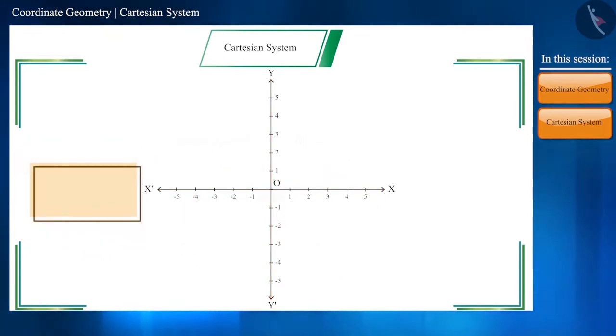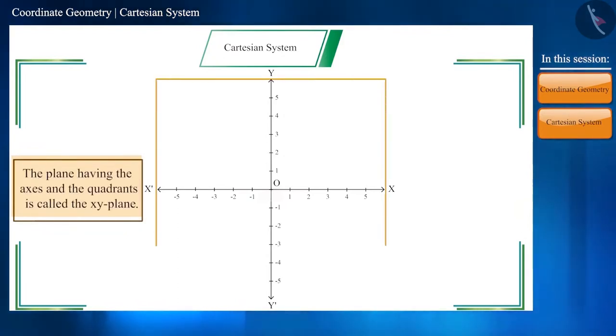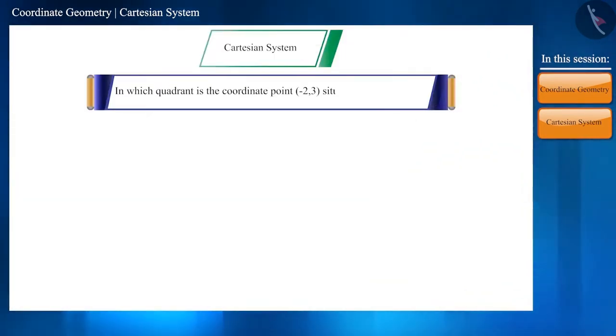That is why these axes are called coordinate axes, and the plane in which these axes and quadrants are is called the x-y plane. Let's look at an example: In which quadrant is the coordinate point (-2, 3) located in the x-y plane?